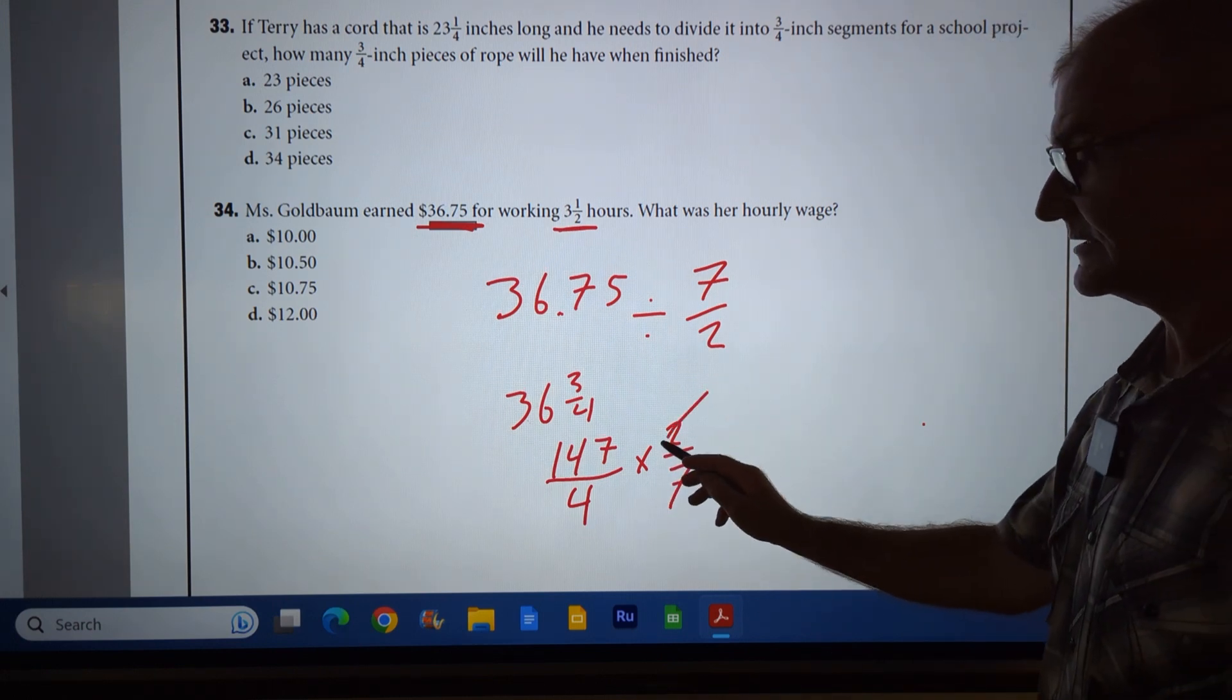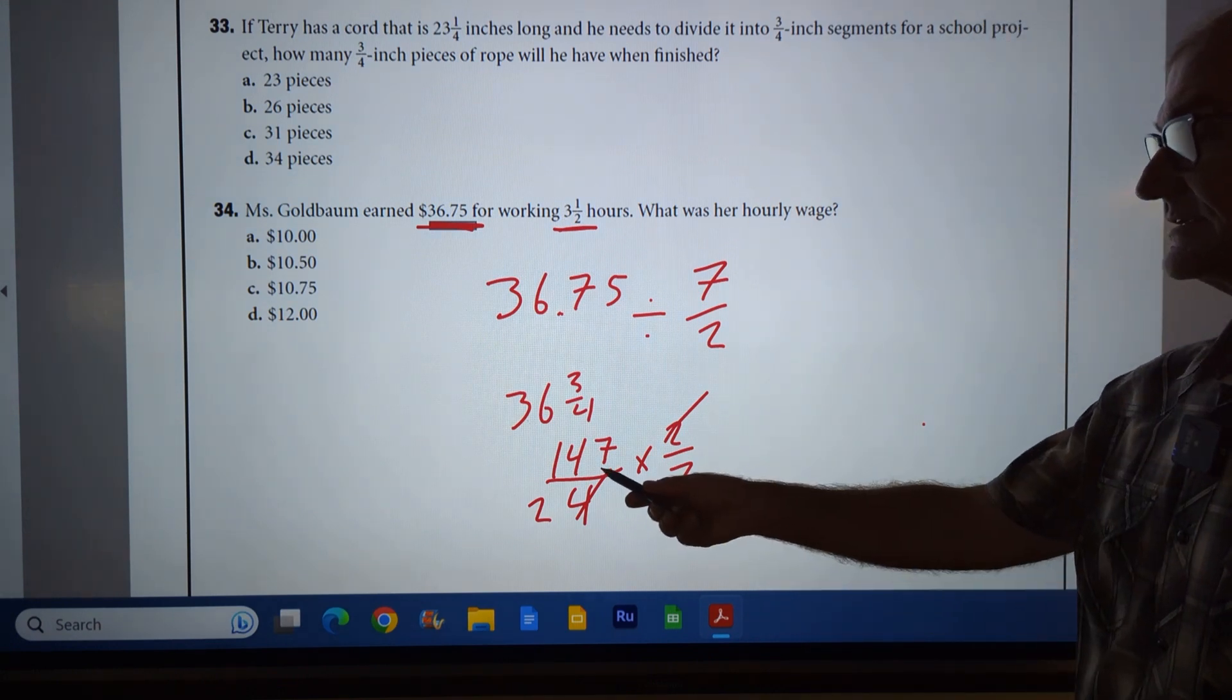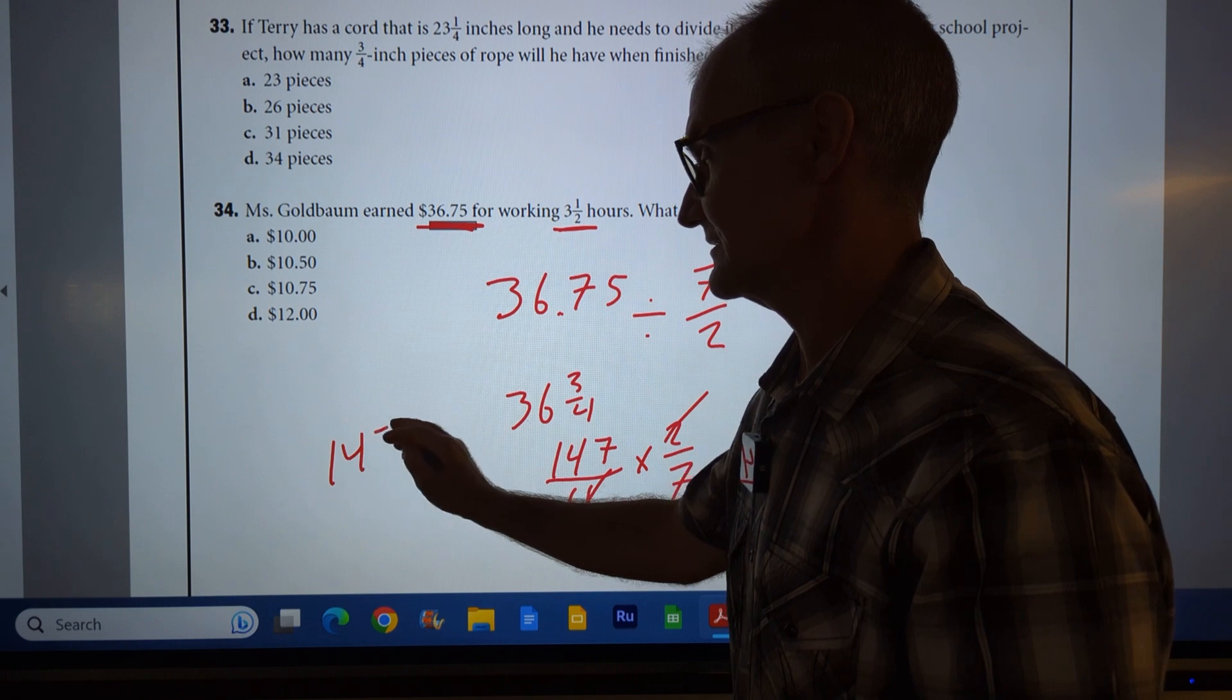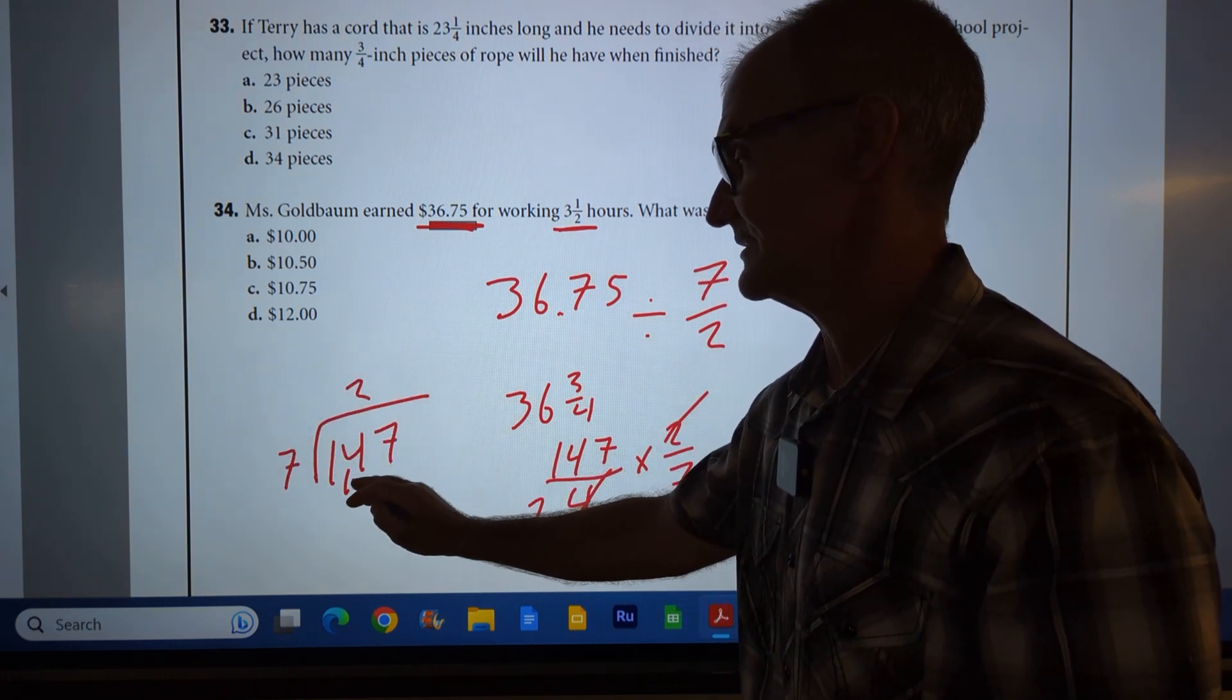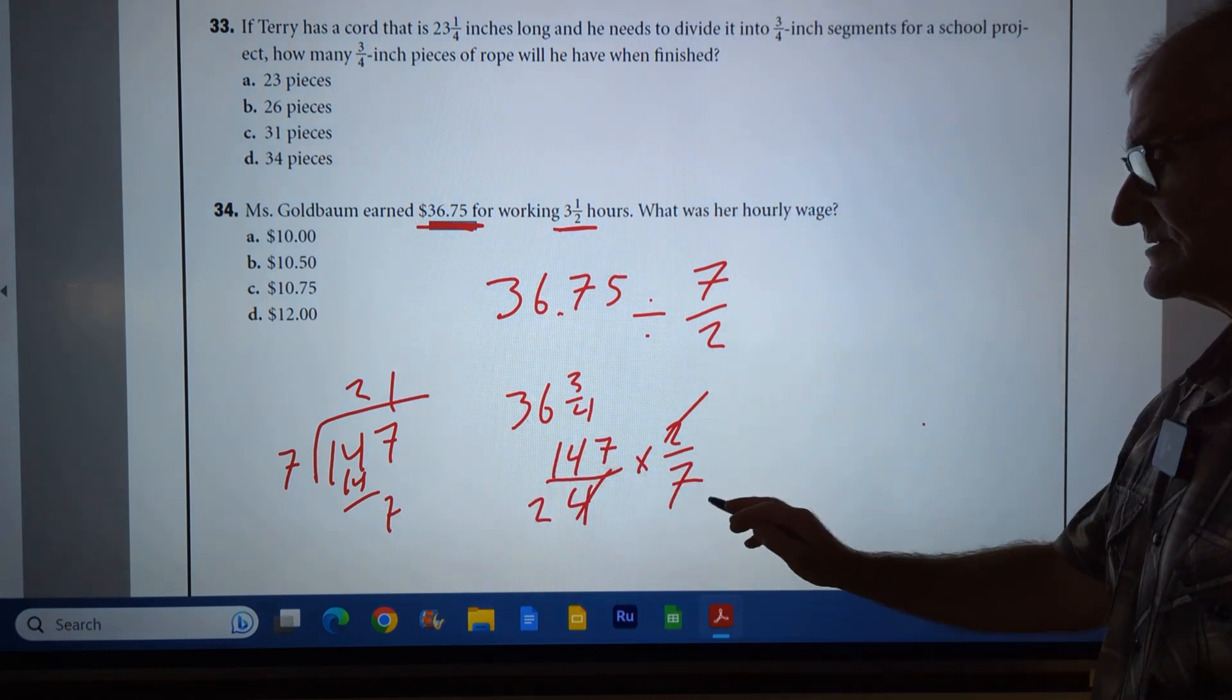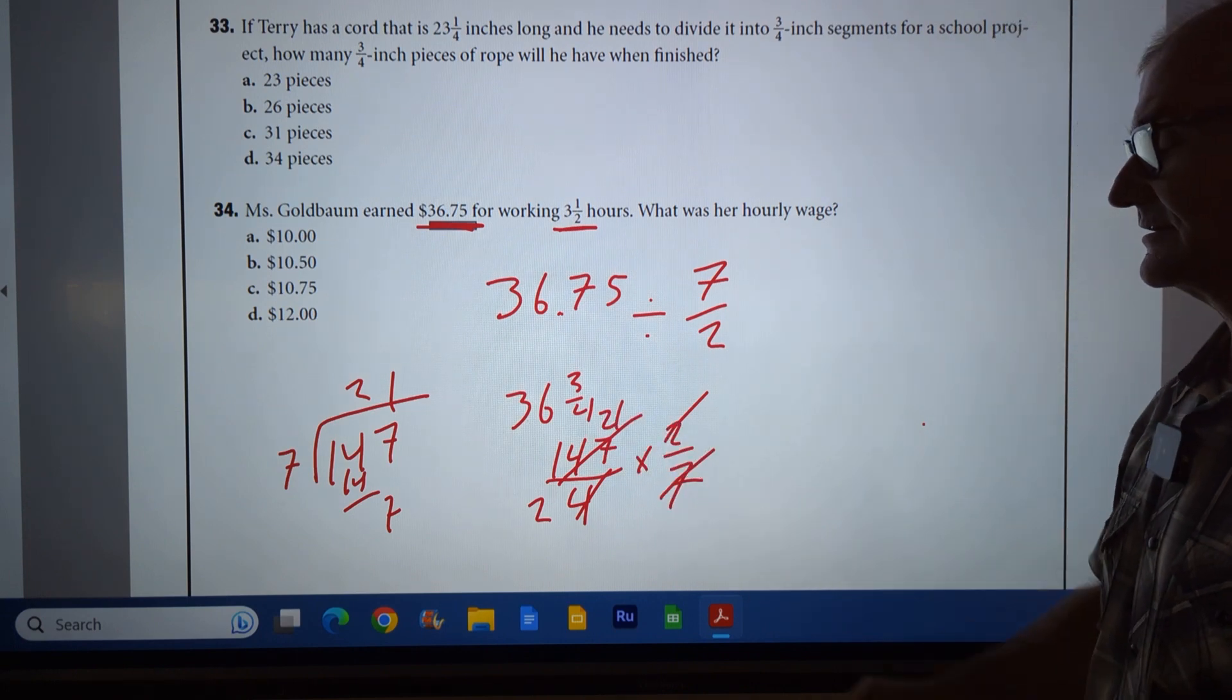Two goes into here once, into here twice. Does seven go into here? I think it does. 147 divided by seven goes in here twice, 14, seven, 21 times. So seven will go into here 21 times and into here one time.